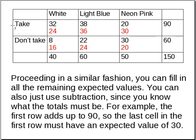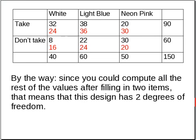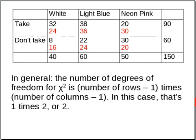You could also just use subtraction, since you know what the totals have to be. For example, the first row adds up to 90, and we already have calculated 24 plus 36, which comes out to 60. Therefore, we know that the last cell must have a 30 in it. In fact, you could compute all the rest of the values after filling in those first two items, which means this design has two degrees of freedom. In general, the number of degrees of freedom for chi-squared is the number of rows minus one, times the number of columns minus one — in this case, one times two, or two degrees of freedom.